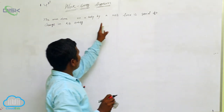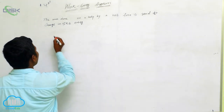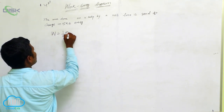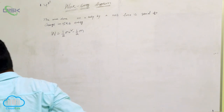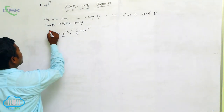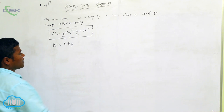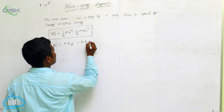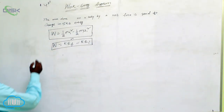The work-energy theorem states that work done on a body by a net force equals the change in its kinetic energy. The formula is: W = ½mv² − ½mu². Alternatively, W = KE_final − KE_initial. Both expressions are correct.